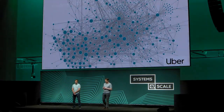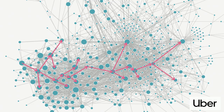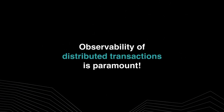This is a diagram rendered by Jaeger — a topology service map of Uber. The edges are communications between services; the size is roughly the traffic. Every time you hit a button on your Uber app, a transaction goes through that architecture and can touch dozens of services and potentially hundreds of nodes. It's almost inconceivable to operate an architecture of this complexity without very good observability into specifically distributed transactions.